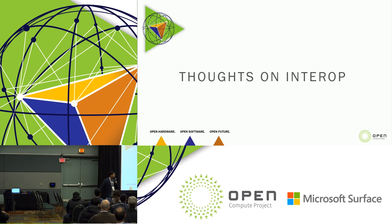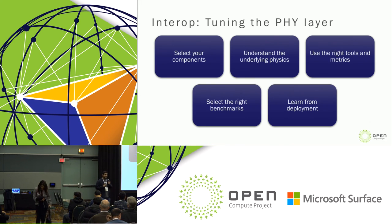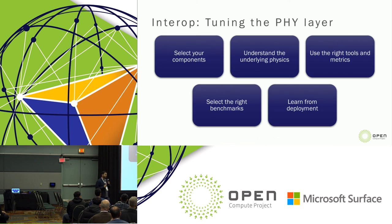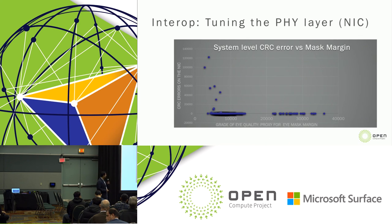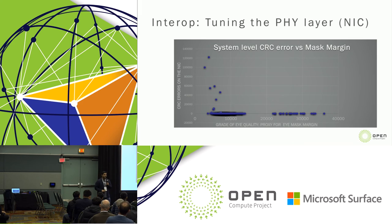A few thoughts on interoperability: we slice it along the lines of selecting components, understanding the underlying physics, working with vendors to build the right tools and metrics, selecting appropriate benchmarks, deploying in the field, and learning from deployment — with monitoring tools to enable that learning. Here you can see a scatter diagram of a link quality proxy we developed with our vendors, correlated against system-level CRC checksum errors on the NIC side. There is a very strong correlation between link quality and CRC errors, making these metrics useful for assessing the quality of the final rack build.